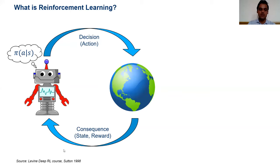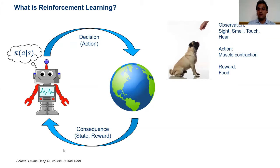In the case of a stochastic policy, it outputs a probability distribution over actions given a state. When deterministic, it simply outputs an action given a state. This concept is actually quite similar to how learning happens in humans and animals — we tend to do things that give us pleasure and avoid things that give us pain. For instance, when training a dog, the state includes sensory signals like sight, smell, and touch; actions correspond to moving muscles; and the reward could simply be food.